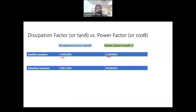However, for the defective insulator, the dissipation factor was 254% — much higher. This has been covered in the previous video. But the power factor is 93%. So why is there this discrepancy?